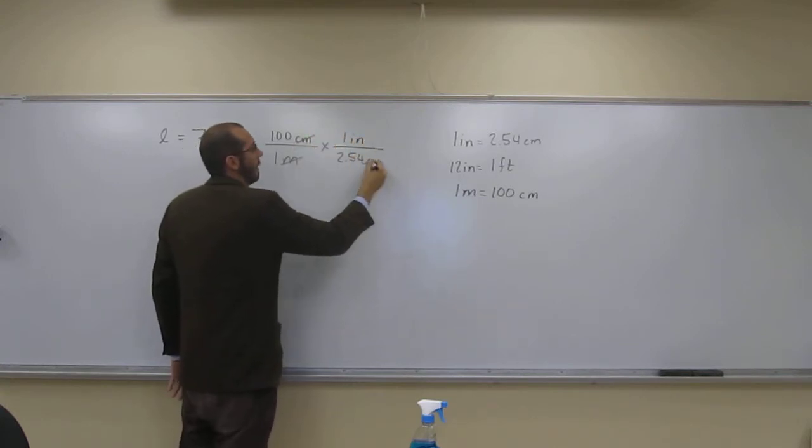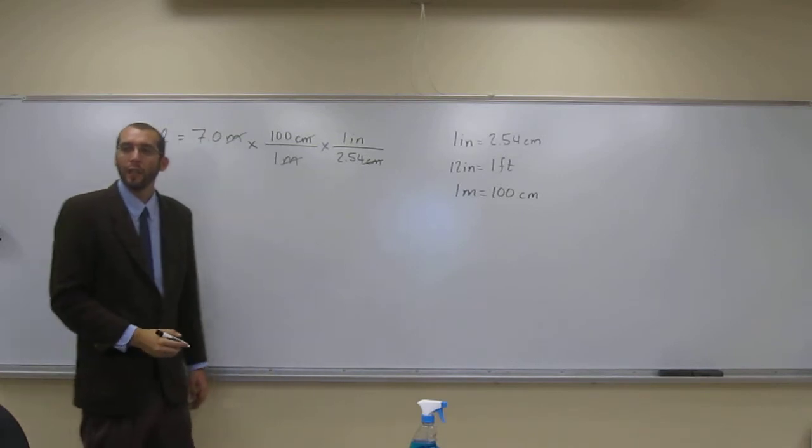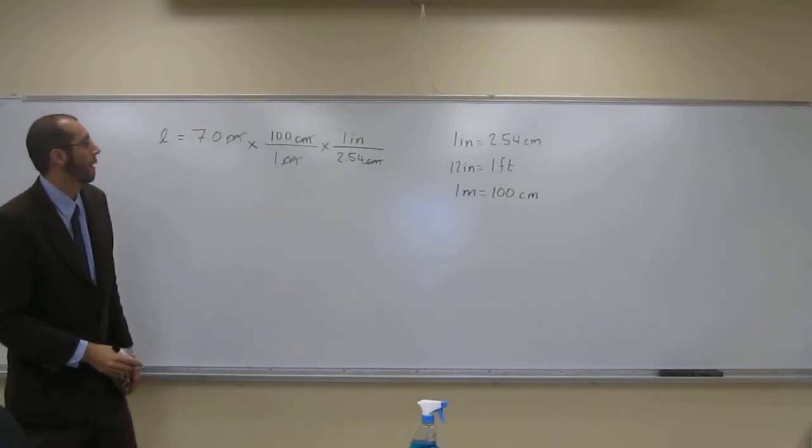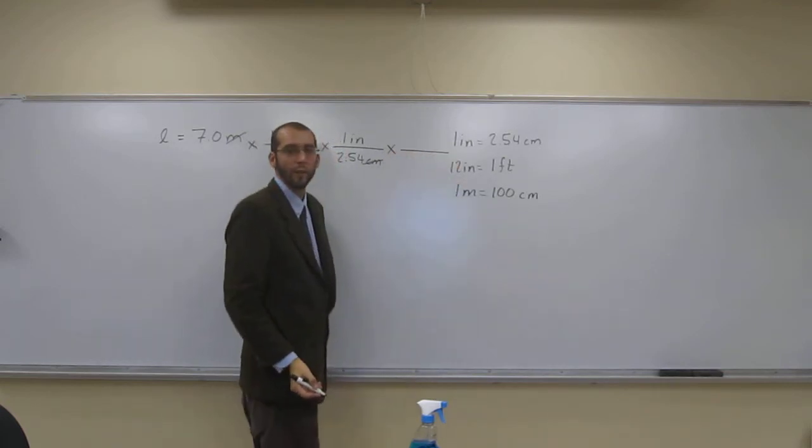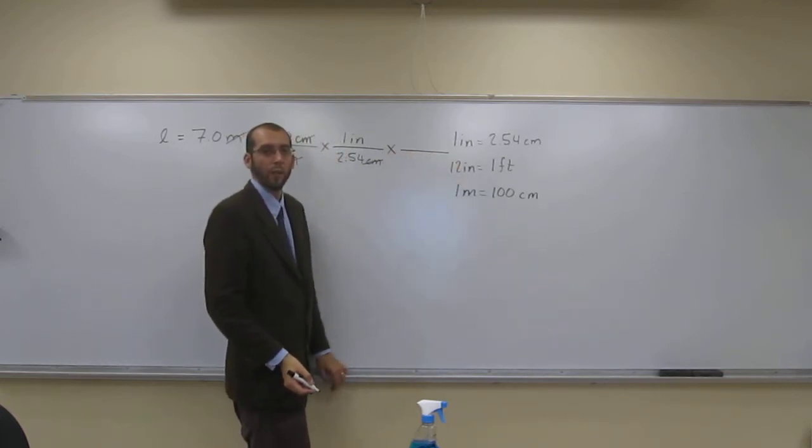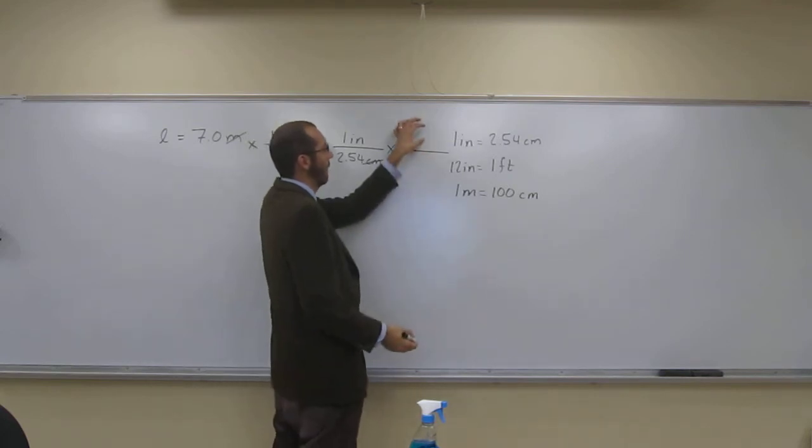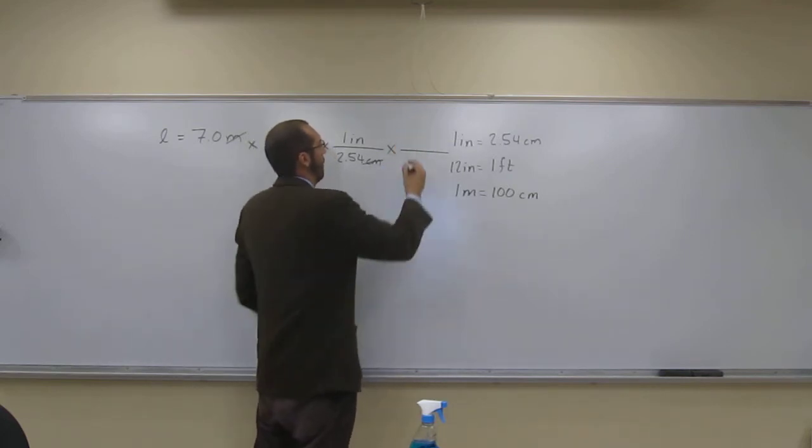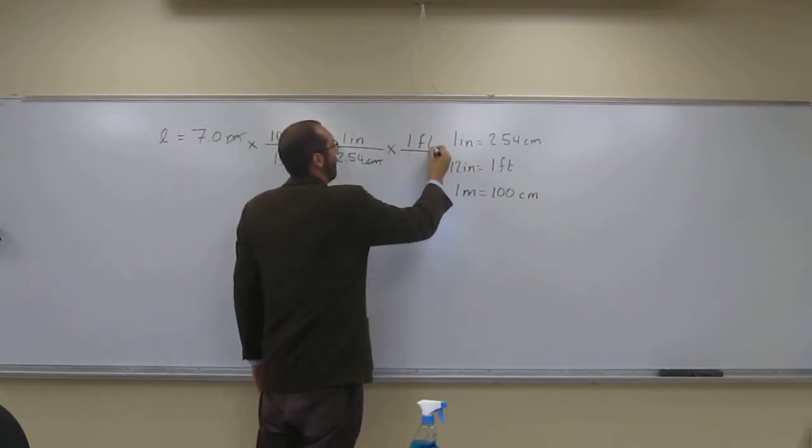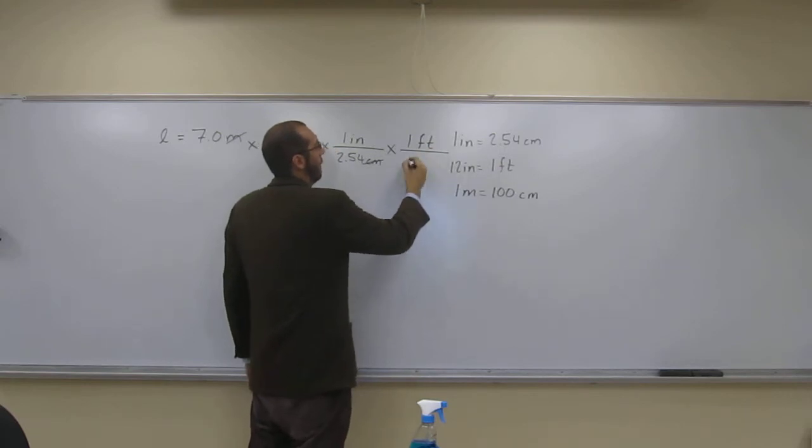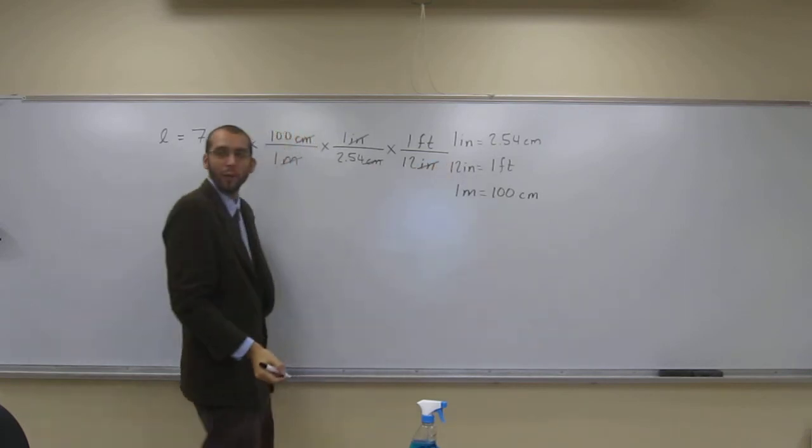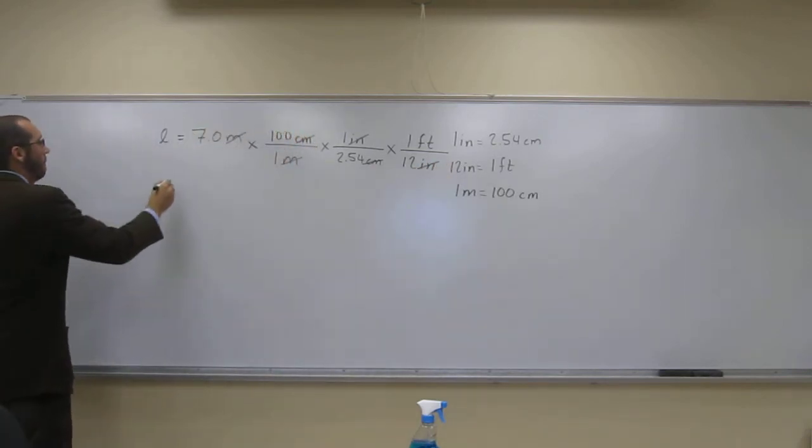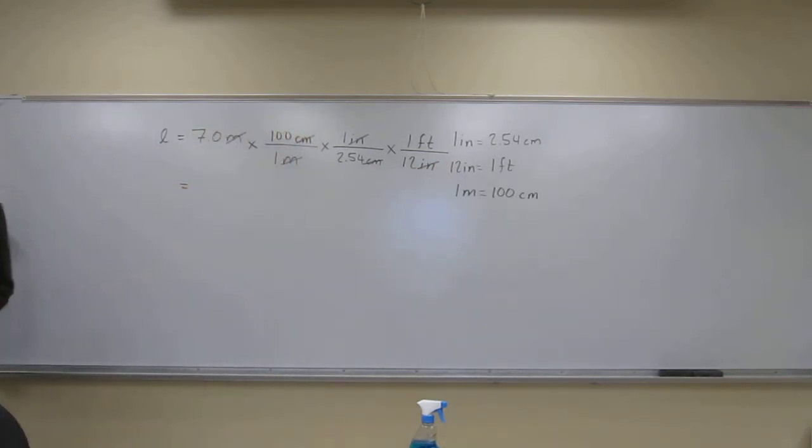So that's going to cancel that, but we're still not in feet yet, right? So we're going to have to multiply this again by another conversion factor. So what are we going to put up here? One foot. And down here? Twelve inches. And cancel, cancel. Are we in feet now? Yes. So that's all we've got to do. Multiply, and then we'll get our answer.